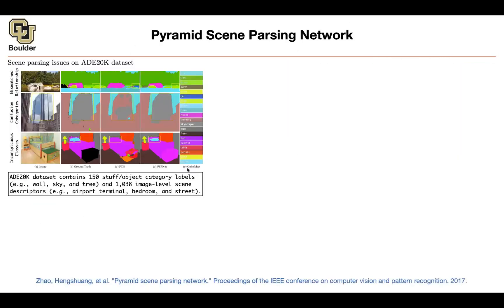This new dataset has a lot of stuff and objects. For comparison, Pascal VOC had 21 object categories, and ADE20K has image-level descriptors like 'airport terminal' or 'bedroom.' Now let's look at the predictions of a fully convolutional network on this dataset — here is the ground truth, and let's examine the mistakes the network makes.